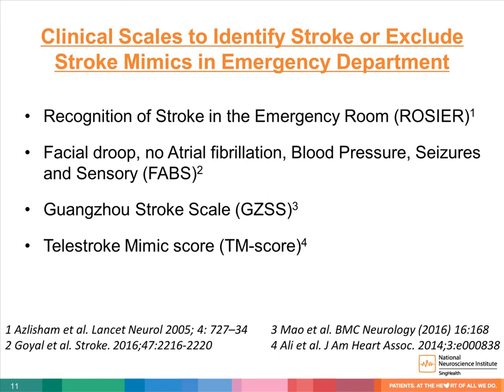There are many clinical tools developed to identify stroke or exclude stroke mimics in the emergency department. One of the most validated is the Recognition of Stroke in the Emergency Room score, also known as the ROSIER score. The ROSIER score comprises clinical variables such as asymmetrical facial, leg, and arm weakness, speech disturbances, and visual disturbances. While the ROSIER score is good at screening for stroke patients, it is not reliable at excluding stroke mimics with certainty. Other scores have been developed specifically to identify stroke mimics in patients already being considered for stroke treatments.